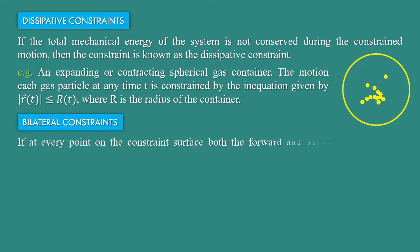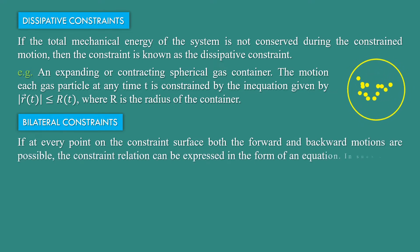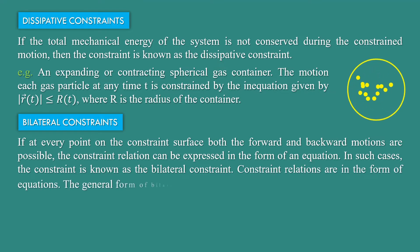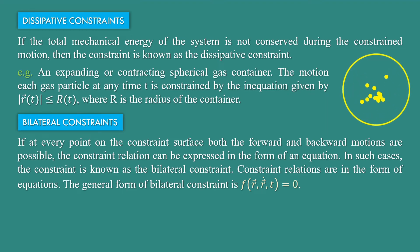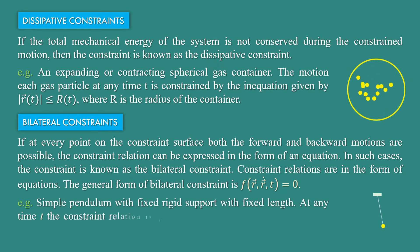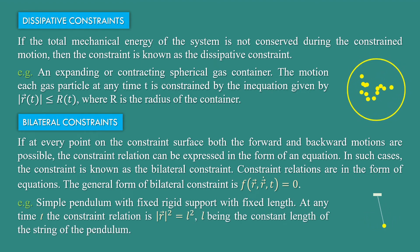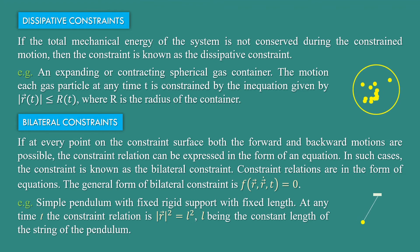Bilateral constraints: if at every point on the constraint surface both forward and backward motions are possible, the constraint relation can be expressed in the form of an equation. In such cases, the constraint is known as a bilateral constraint. The general form is f(r⃗, r⃗̇, t) = 0. For example, a simple pendulum with fixed rigid support and fixed length — at any time t, the constraint relation is |r⃗|² = l², where l is the constant length of the string.